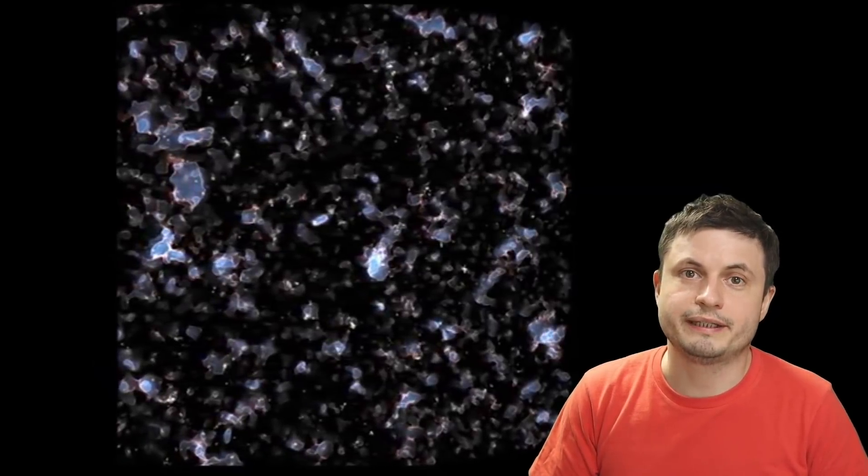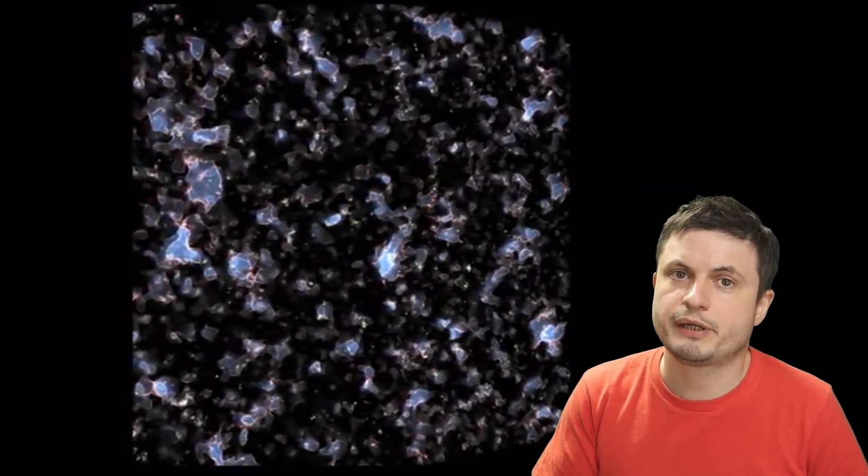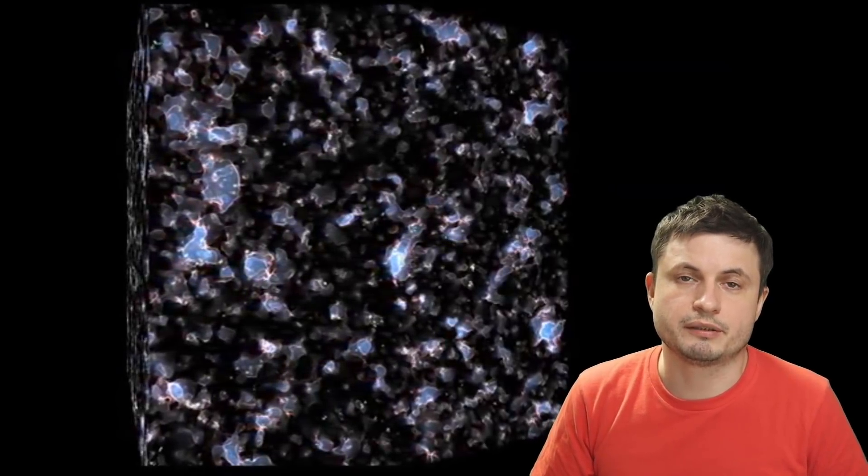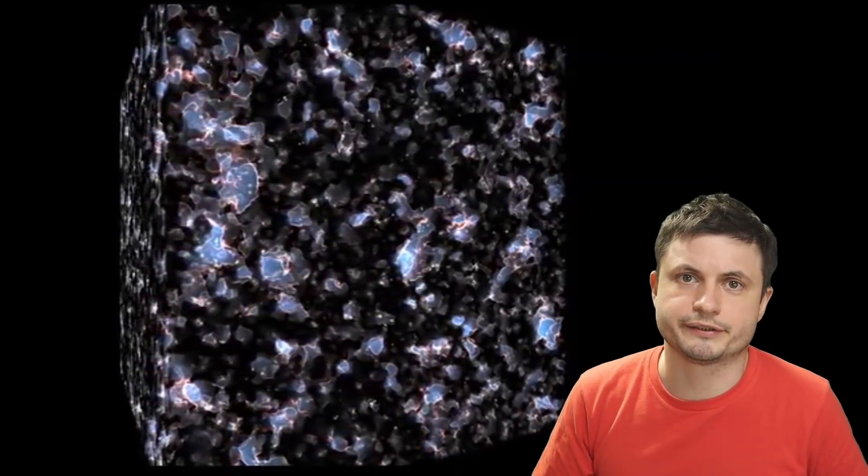And obviously there are a lot of different propositions and possible solutions to where this matter could be hiding. Like for example, maybe and most likely it's hiding between galaxies in the intergalactic space. But it could also be hidden in things like black holes, different difficult to see rogue planets, and a lot of other stuff like interplanetary and interstellar dust.